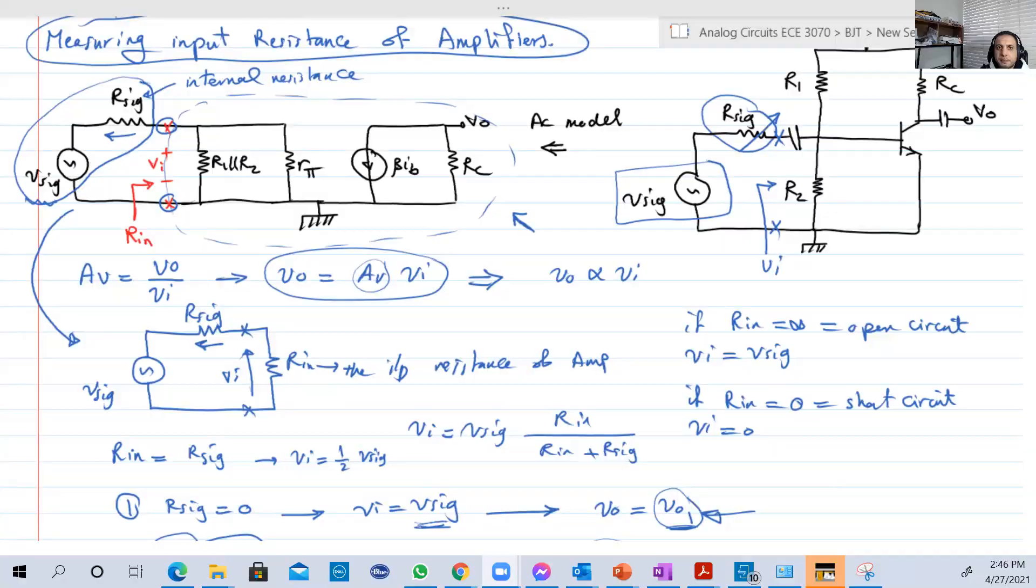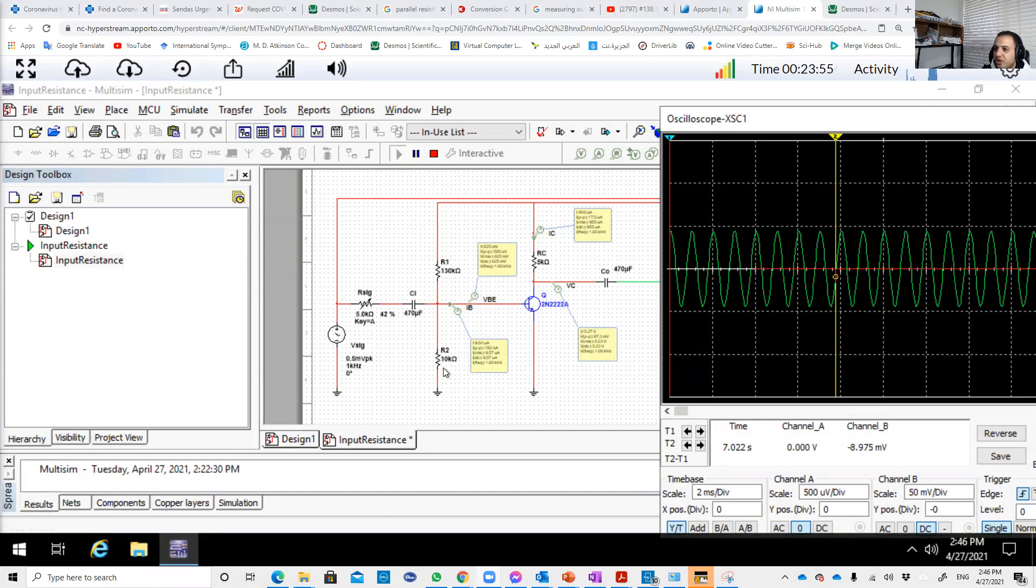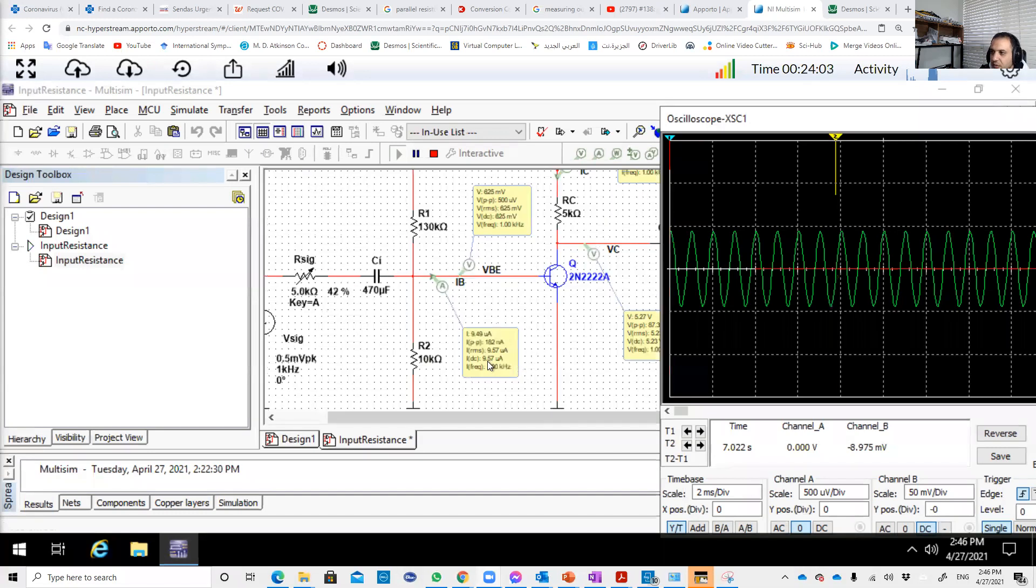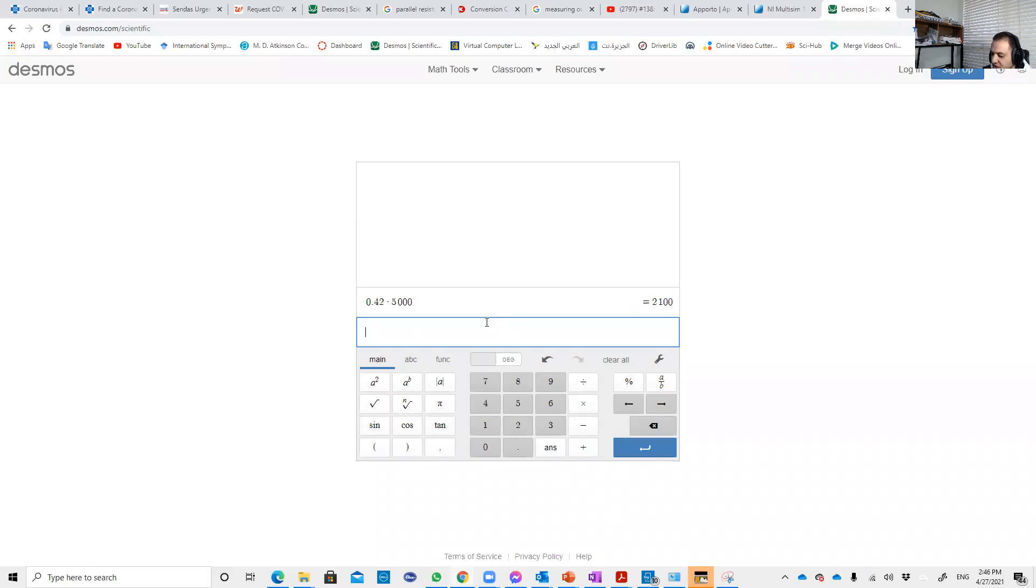So let's go back to Multisim. So R1 is 130 kilo ohms, R2 is 10 kilo ohms. R5 is VT, 25 millivolts over IB. IB is, if we zoom out, 9.57 microamps. So let's calculate it. So we need 25 millivolts over 9.57. Remember, this is micro, so multiply it by 10 to the power of minus 3. Yes, 2.6 kilo ohms. Now we need to calculate the parallel equivalent of these resistances.